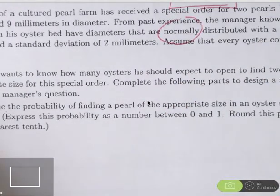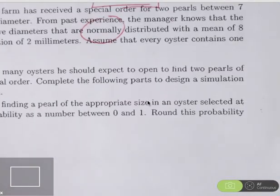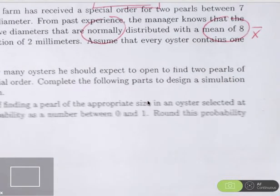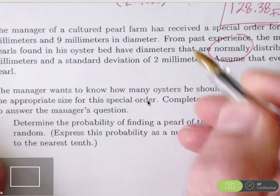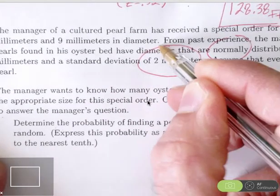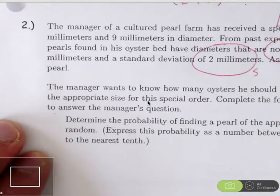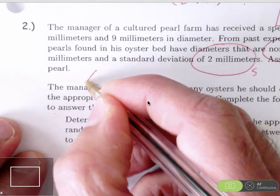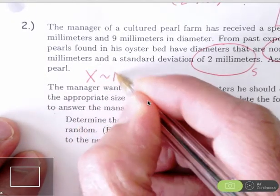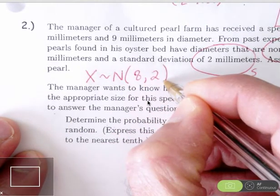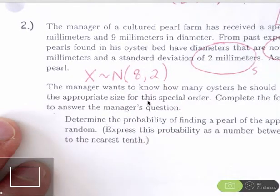We know that the mean is 8 millimeters - there is the center. The standard deviation is 2 millimeters - there is our measure of spread. We're assuming that every oyster contains one pearl. The diameters are distributed normally with a mean of 8 and a standard deviation of 2 millimeters. That's the information that we have so far.